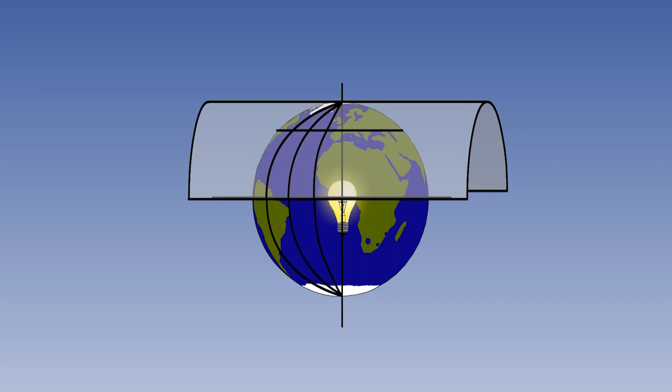We put in a parallel of latitude. Now let's try to imagine how this will appear on the flat sheet. Let's start by considering the distance from the North Pole down the datum meridian. The cylinder is touching the reduced Earth along this line. The scale will be absolutely correct. The length of the line on the paper will be the same as the length of the line on the globe.